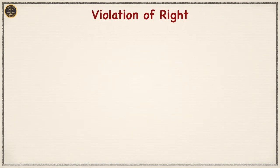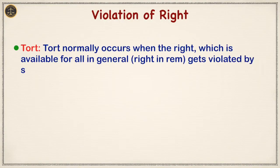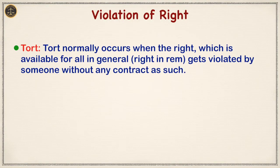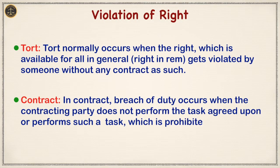Next, violation of right. Tort normally occurs when the right which is available for all in general — right in rem — gets violated by someone without any contract. On the other hand, in contract, breach of duty occurs when the contracting party doesn't perform the task agreed upon, or performs a task which is prohibited in the contract.